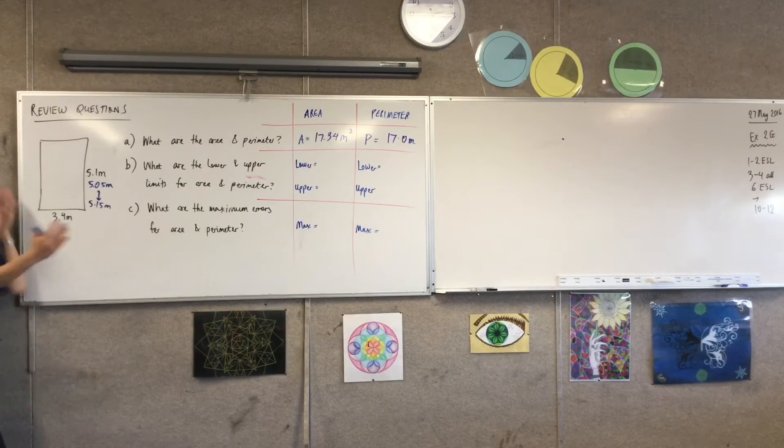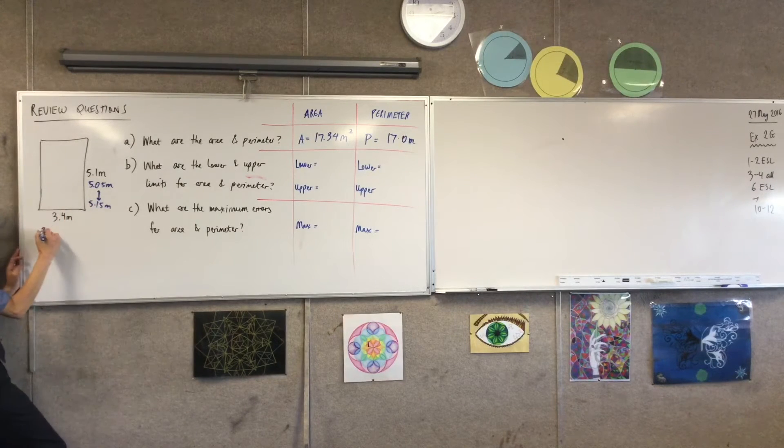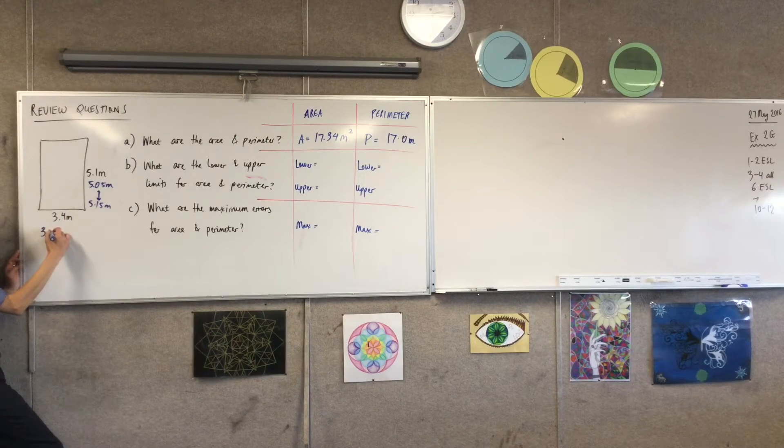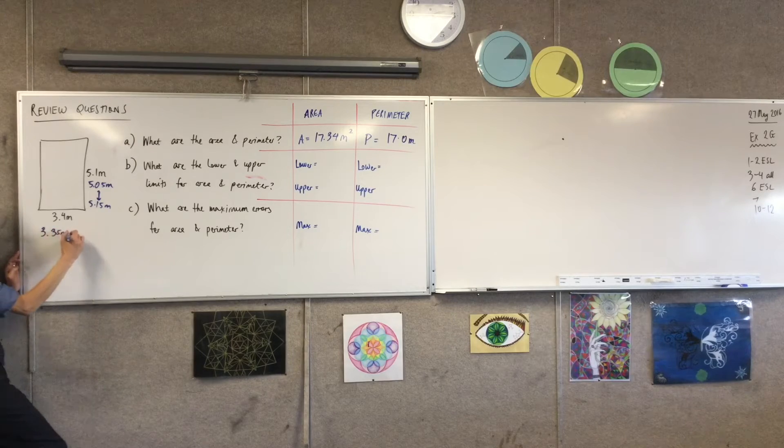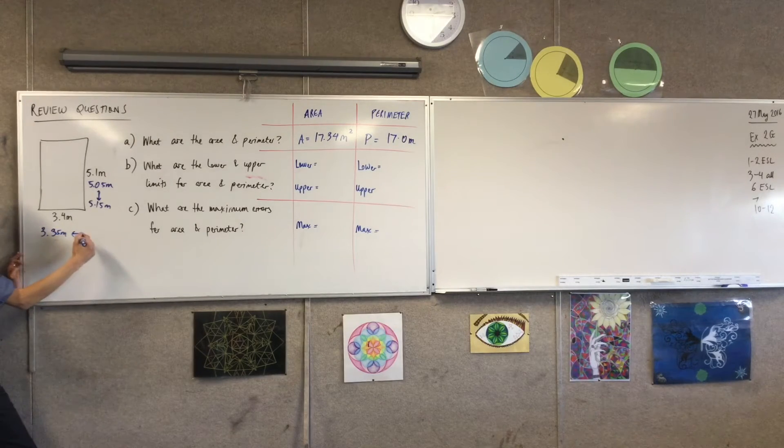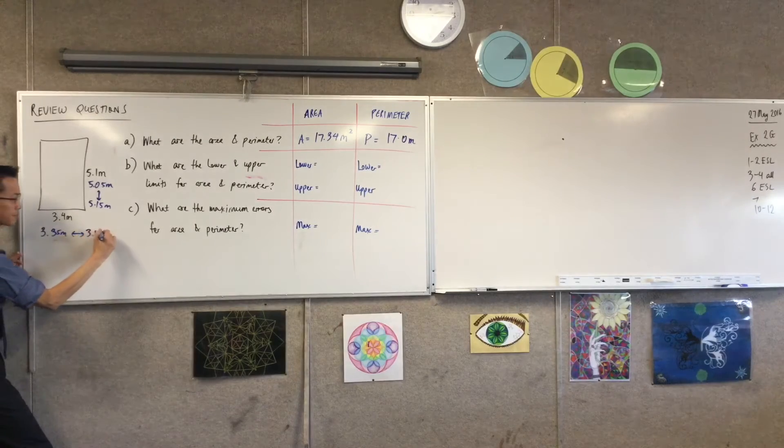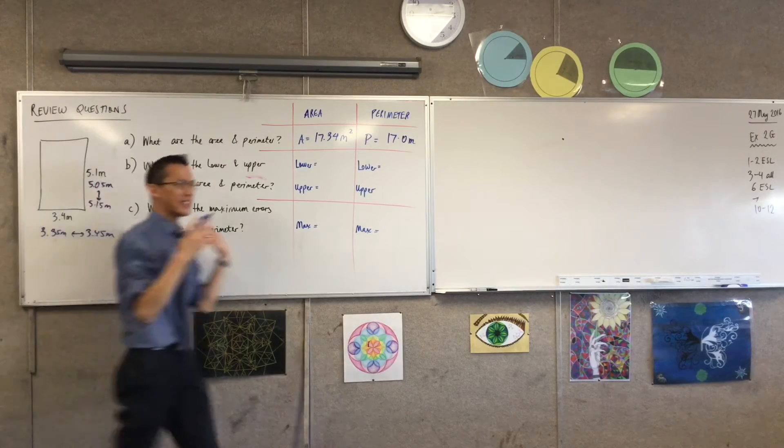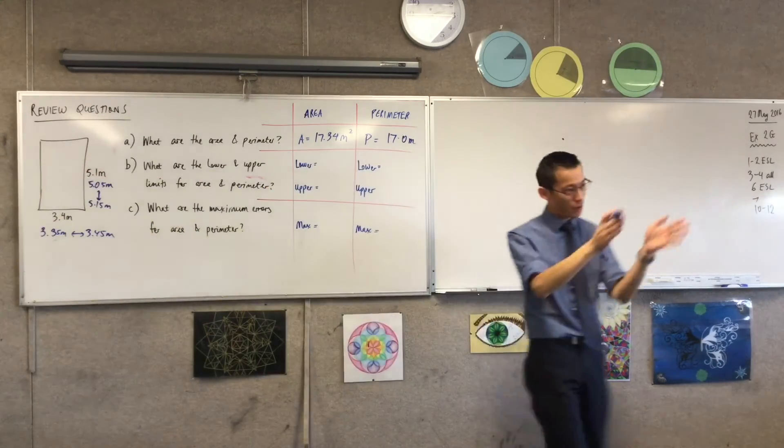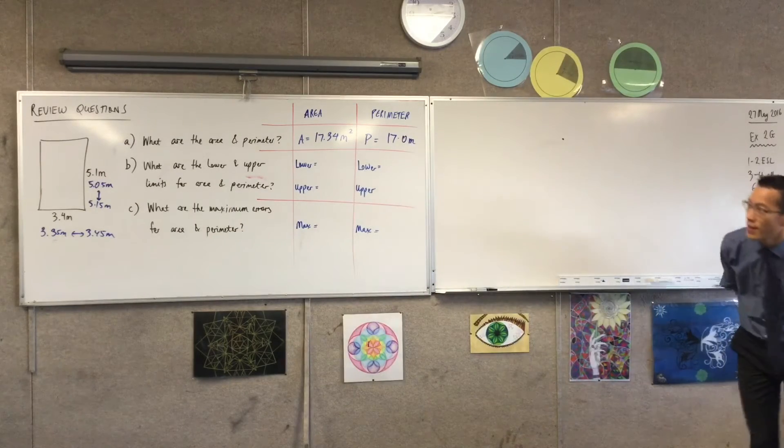In the same way, 3.4, what are my lower and upper bounds going to be? 3.35. And the biggest it could be would be 3.45. Cool. So remember, we're thinking about a limit of reading, we're halving that, and we're going up and down, okay? Cool. That was the tricky bit.